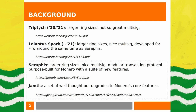Lelantus Spark was another avenue from 2021 that Firo is pushing forward, offering large ring sizes and nice multi-sig. Seraphis is being developed by a Monero-focused researcher and also supports larger ring sizes, nice multi-sig, and a new modular transaction protocol specifically built for Monero with a host of new features. Jamtis came along a bit after Seraphis, by Tevedor, who also implemented RandomX and Polyseed — it's a set of well-thought-out upgrades to Monero's core features that can be supported alongside Seraphis.